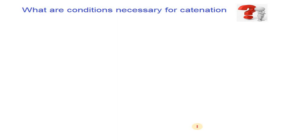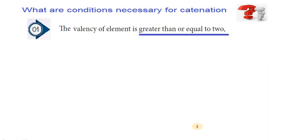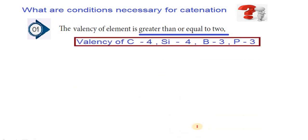What are the conditions necessary for catenation? Examination point of view, this is the most important question. Point number one. The valency of element is greater than or equal to two. What is the meaning of this? The elements showing catenation properties are having greater valencies. You see carbon has the valency 4. Silicon, the valency is 4. Boron, valency is 3. Phosphorus, valency is 3. Point number one says about the valency of the atoms which has to be equal to 2 or greater than 2.